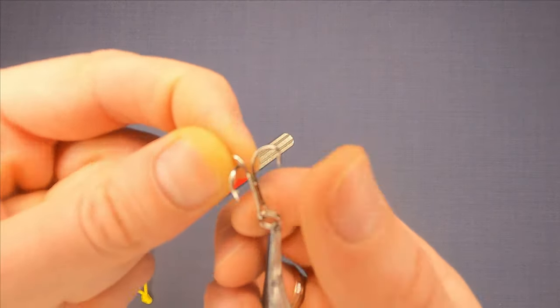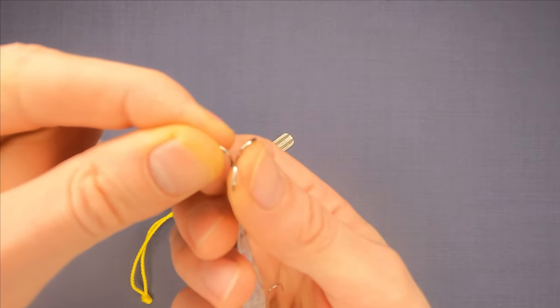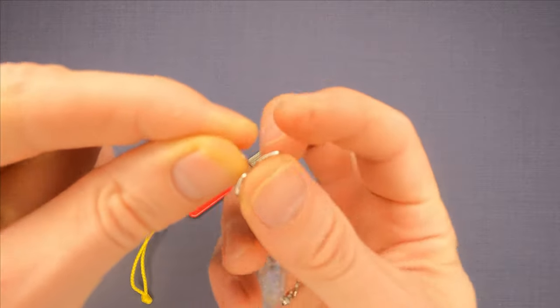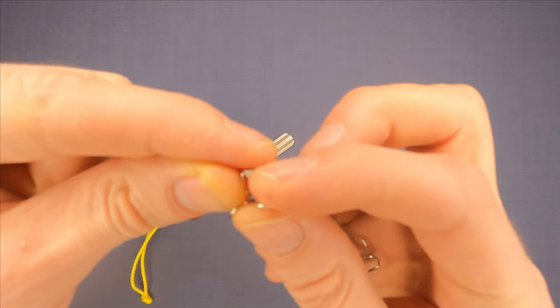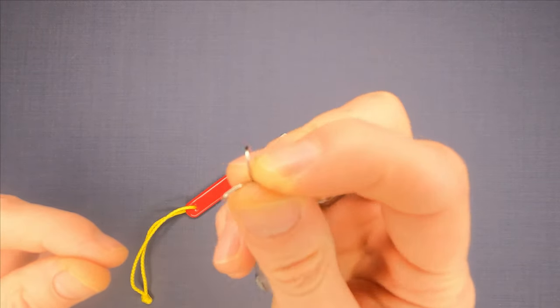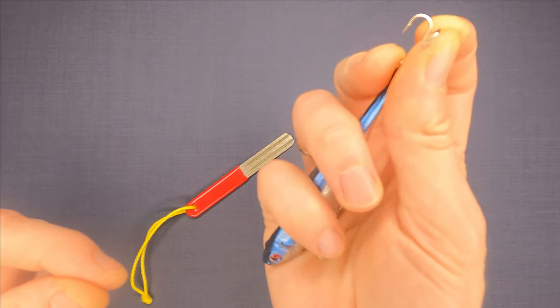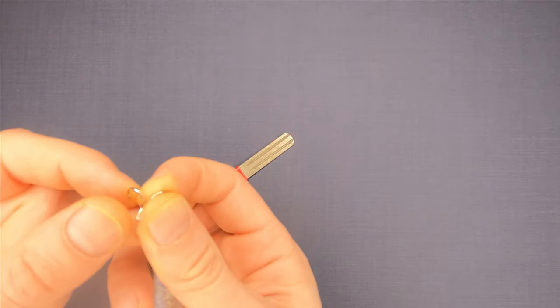Put your thumb against two hook points that you don't want to sharpen and your index finger on the top of it. Your middle finger goes on the shaft of the hook.